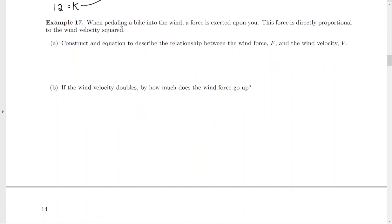This one, they don't give me a whole lot of information. You're pedaling your bike into the wind, force exerted upon you. This force, so I'm going to call that F, is directly proportional to the wind velocity squared. And our wind velocity is being represented by V. And then we've got to square it. That's the relationship. Now they didn't give me any numbers to plug in to find K. So this is as far as I go for part A.